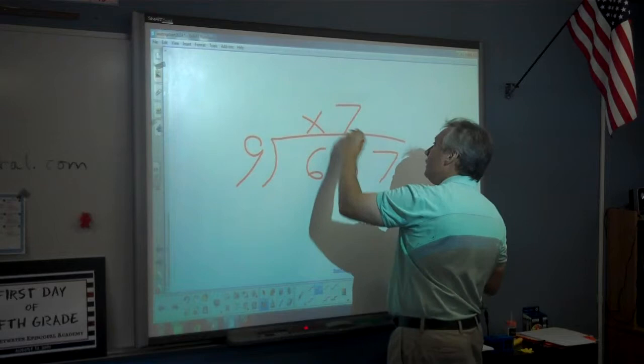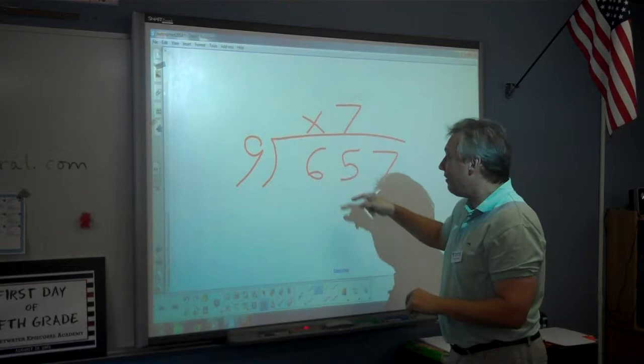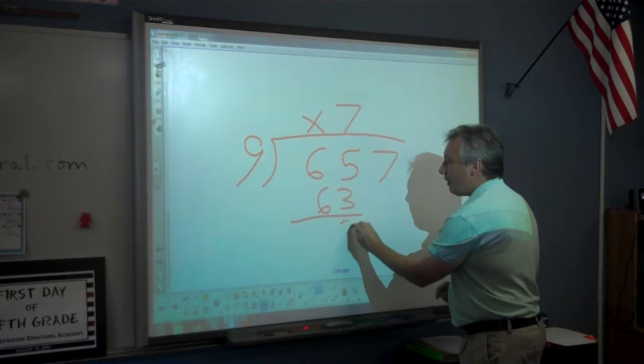The biggest difference in long division is instead of just mentally thinking 65 minus 63, we have to write it down. And then we subtract and either way we still get that same 2 as a remainder.